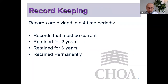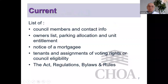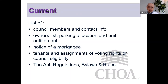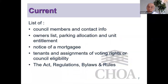Current records include items that owners, tenants, and property managers will need access to. These include council members and their contact information, an owners list with parking allocations and unit entitlement — make sure your owners lists are up to date; some strata corporations are doing title searches to verify actual owners. Also current: notices of mortgagees, where a bank or financial institution has given specific notice requiring contact if certain special levies or financial conditions occur.